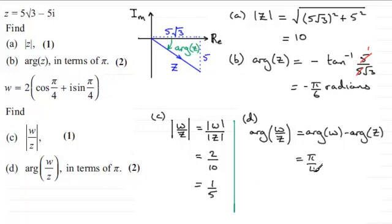And from this we have to subtract the arg of z, which was minus pi upon 6. And working this out gives you 5 pi over 12. 5 pi over 12. I'll put in radians there.